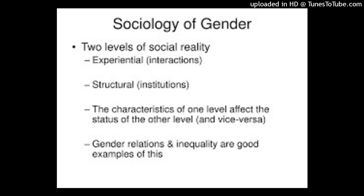According to Lorber, as a social institution, gender creates a distinguishable social status for the assignment of rights and responsibilities. As part of the stratification system that ranks these statuses unequally, gender is a significant building block in the social structure built on this unequal status. As a process, gender creates the social differences that define women and men in social interaction throughout their lives. Individuals learn what is expected, see what is expected, act and react in expected ways, and thus simultaneously construct and maintain the gender order. Members of a social group neither make up gender as they go, nor precisely repeat it in rude fashion — what was done before. They reinforce gender expectations through the family, the workforce, and other organizational institutions, because gender is a process.